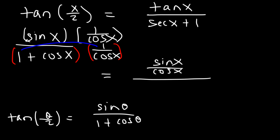So 1 times 1 over cosine, well that's going to be the same thing, 1 over cosine. And cosine times 1 over cosine, they will cancel, leaving behind 1.